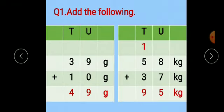Now let's solve some examples based on this. Question number 1: Add the following. Here we will add the weights. First one is 39 gram plus 10 gram. Now start addition from the units place. 9 plus 0 is 9. 3 plus 1 is 4. Answer is 49 gram.